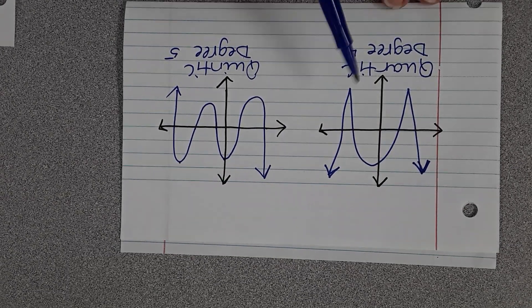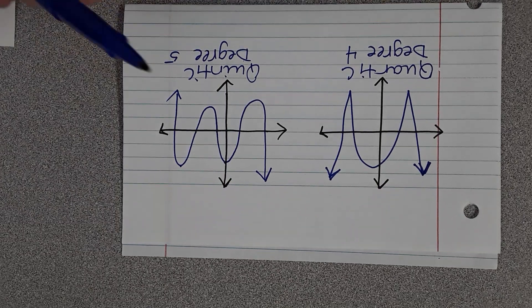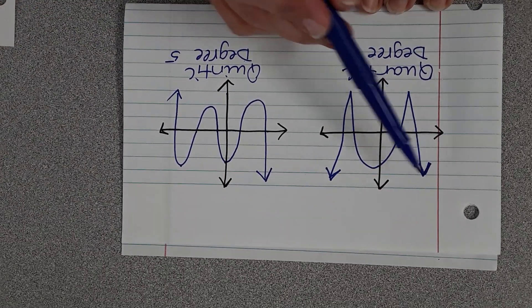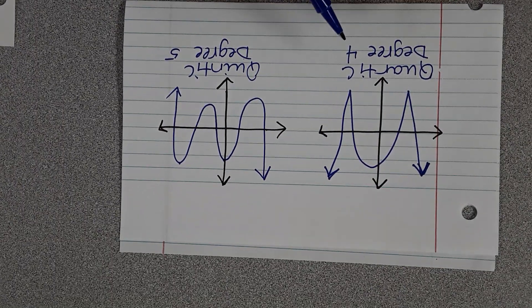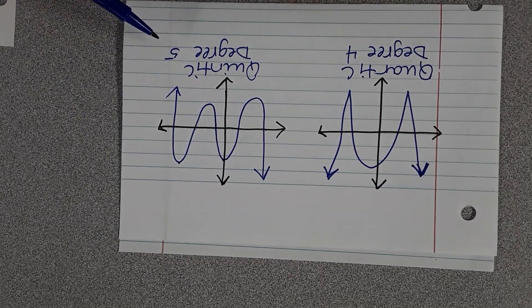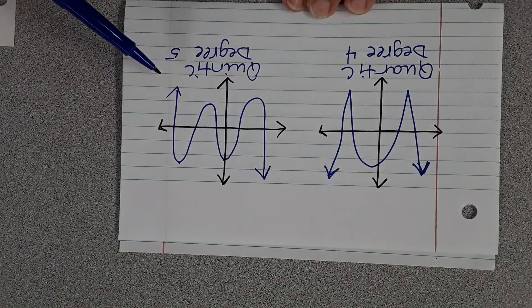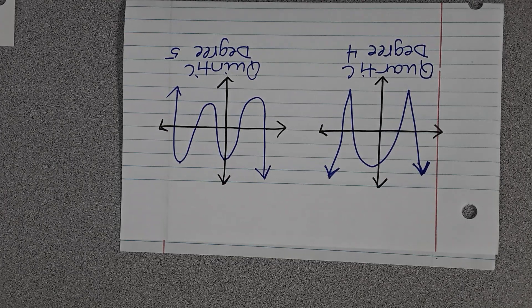This is a degree of 4, called a quartic. The highest exponent would be 4. Notice it started up and the end behavior is up, because 4 is an even degree. Quintic is 5, which means it's an odd one. Notice it started up and it ended down. Those are the end behaviors you need to know by looking at the degree.